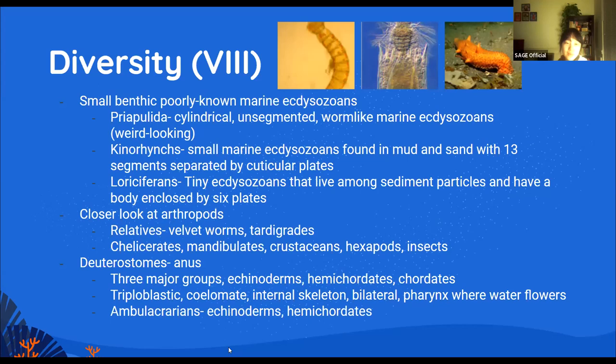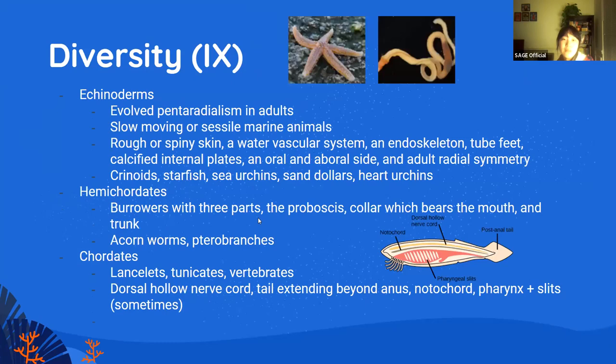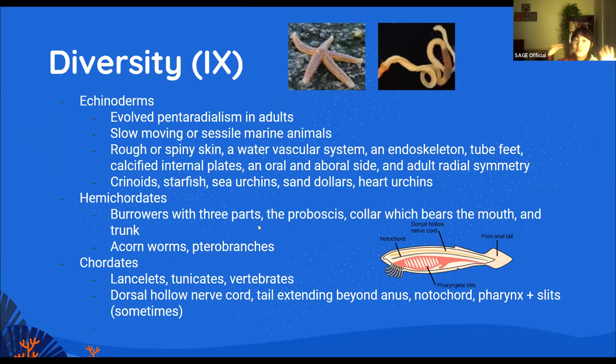There are three major groups of deuterostomes: echinoderms, hemichordates, and chordates. Echinoderms evolved a special trait called pentaradialism — they have five-pointed symmetry, as you've seen in starfish, which is an echinoderm. Other examples include crinoids, starfish, sea urchins, and heart urchins. They have rough and spiny skin.